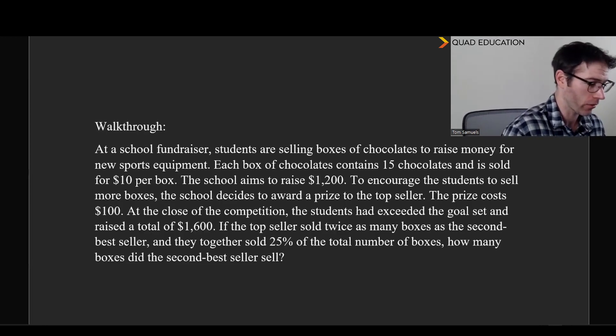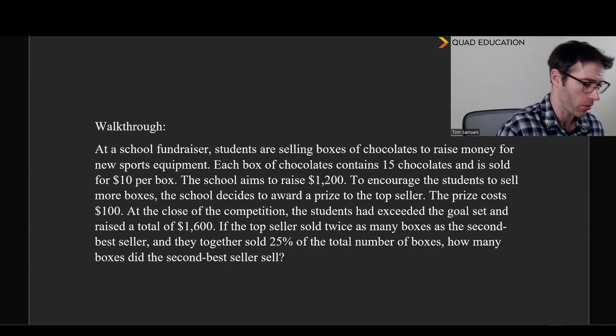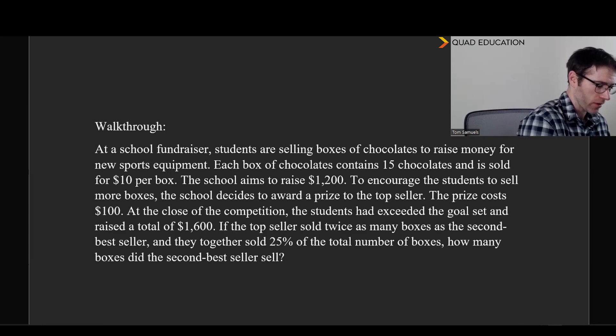Okay, so let's put this all together and walk through one of these before we go to our example problems proper. So we've got big, long, whole bunch of words. And let's take a look at the end first. So, if the top seller sold twice as many boxes as the second best seller, and together they sold 25% of the total number of boxes, how many boxes did the second best seller sell? Interesting. Okay, so let's look at the rest of the context and see what's going on here.